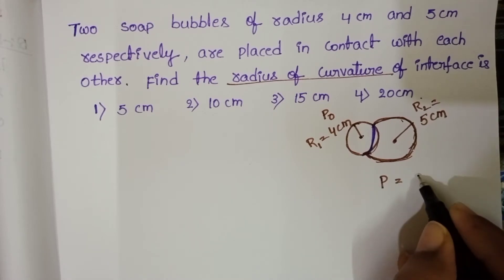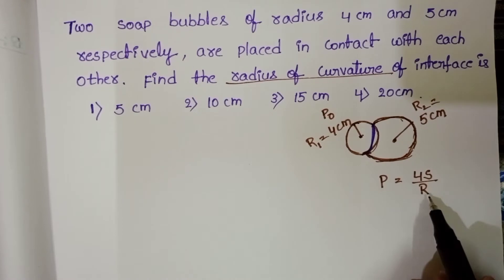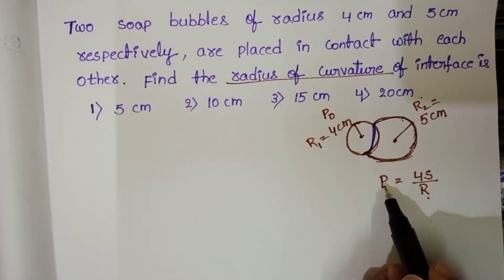P equals 4s by R. When radius is small, pressure exerted by the bubble is more.